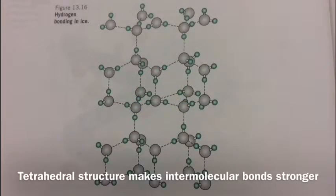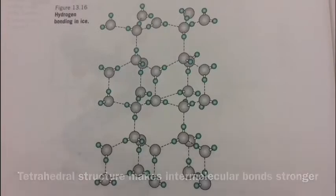Further, the tetrahedral lattice structure of solid water means that it requires even more energy to melt water. This results in water having a higher than average melting and boiling point.